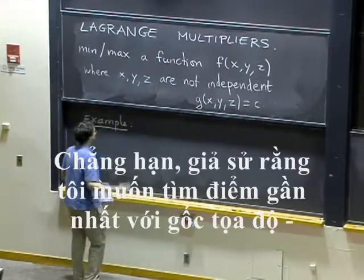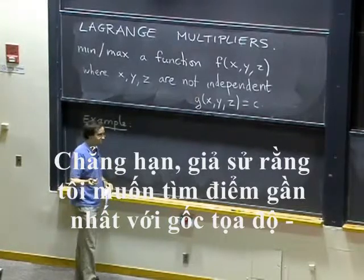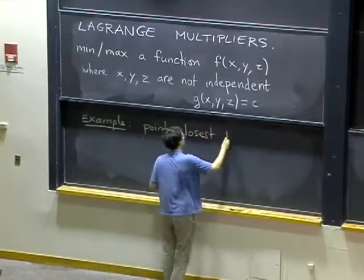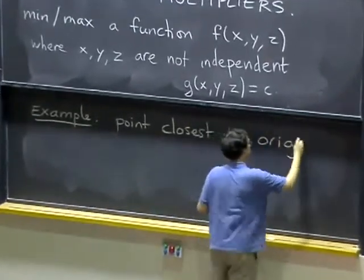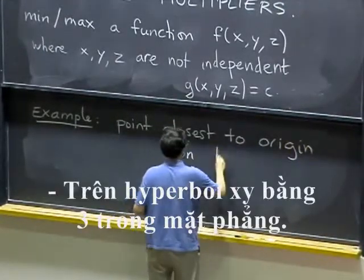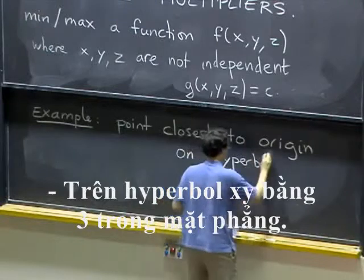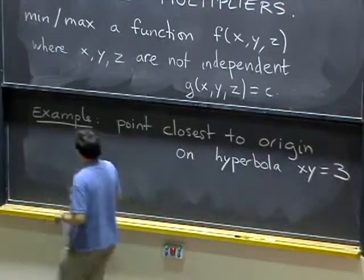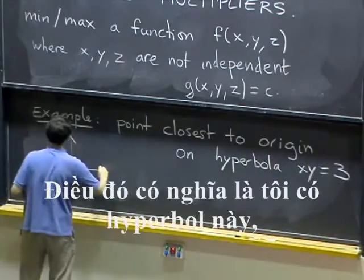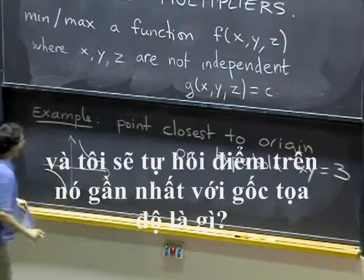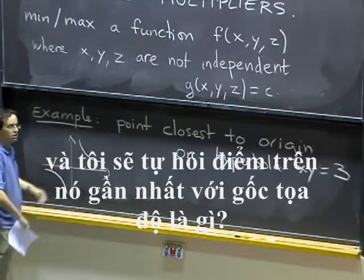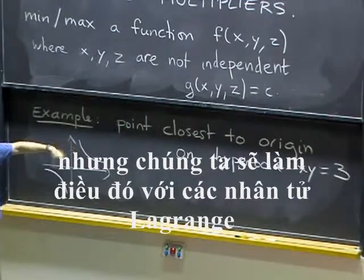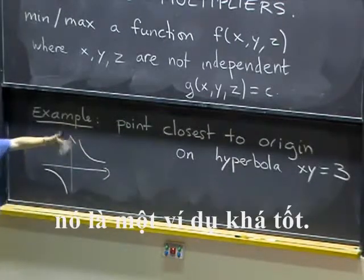For example, let's say that I want to find the point closest to the origin on the hyperbola xy equals 3 in the plane. That means I have this hyperbola, and I'm asking myself, what's the point on it that's closest to the origin? We can solve this by elementary geometry. We don't need actually Lagrange multipliers, but we are going to do it with Lagrange multipliers because it's a pretty good example.